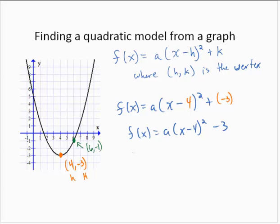So I'll replace the negative 1 for the output and the 6 for the input. Negative 1 is equal to a times 6 minus 4 squared minus 3. Now I just need to solve for a. Negative 1 is equal to a times 2 squared minus 3. Negative 1 is equal to a times 4 minus 3.